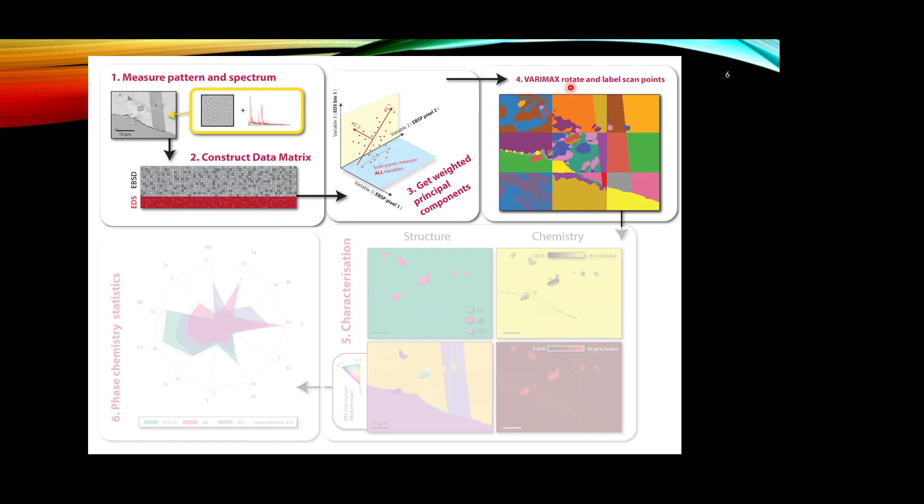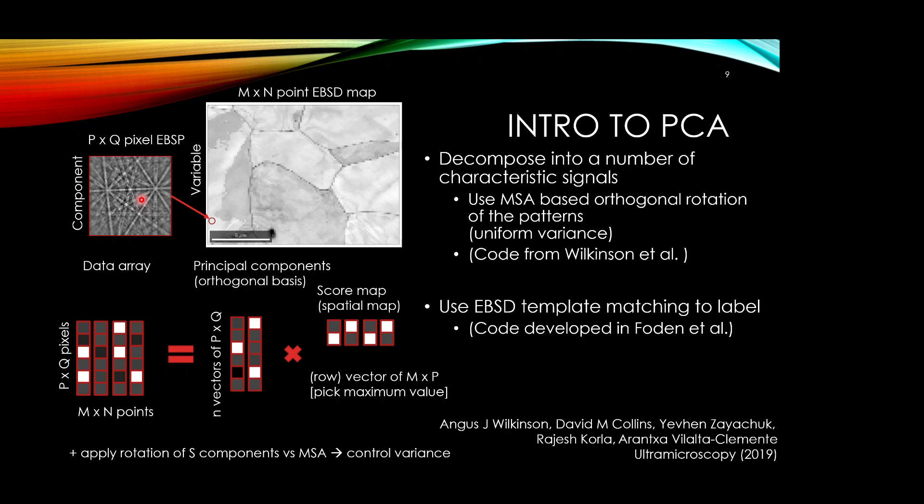To do this, we use the principal component approach where we take our diffraction pattern, turn it into a single vector, and in a principal component approach you create a series of principal components that describe strong variations in your map. Each component goes onto a score map, which is the spatial distribution of how those components map into the physical data. If you have one score that's very high compared to the rest, then this characteristic principal component diffraction pattern would correspond to that domain as described by the spatial map. In the multivariate statistics approach, we take the top end principal components and rotate them to go from having a change of variance to a near uniform variance between the components.